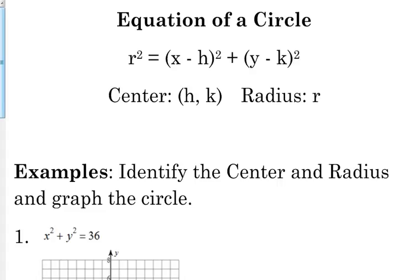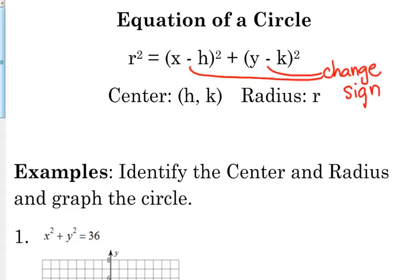Now on your paper, if you look at the equations, not all of those are X minus a number or Y minus a number. What that negative is saying is you're going to change the sign. So if it's X plus two, then the X coordinate of your center is going to be at negative two. If it's Y minus three, then the Y coordinate of your center is going to be positive three. So that minus sign means change the sign when you identify your center.